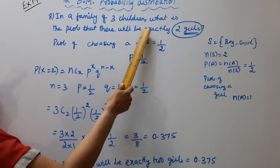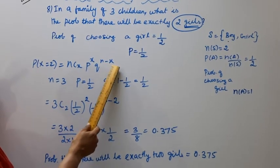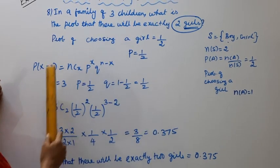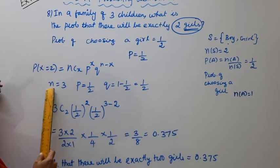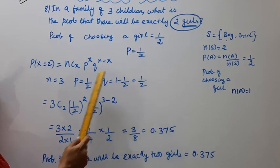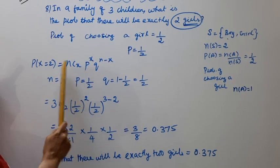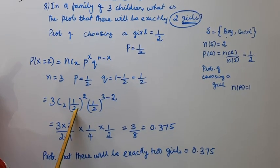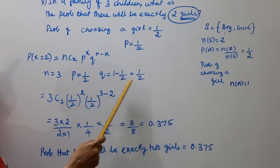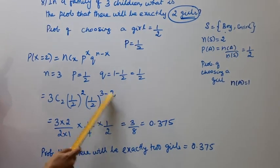P of x equals nCx times P power x times Q power n minus x. Here n equals 3 children, P equals 1/2, and Q equals 1 minus P equals 1 minus 1/2 equals 1/2. Substituting: 3Cx times (1/2)^x times (1/2)^(3 minus x).